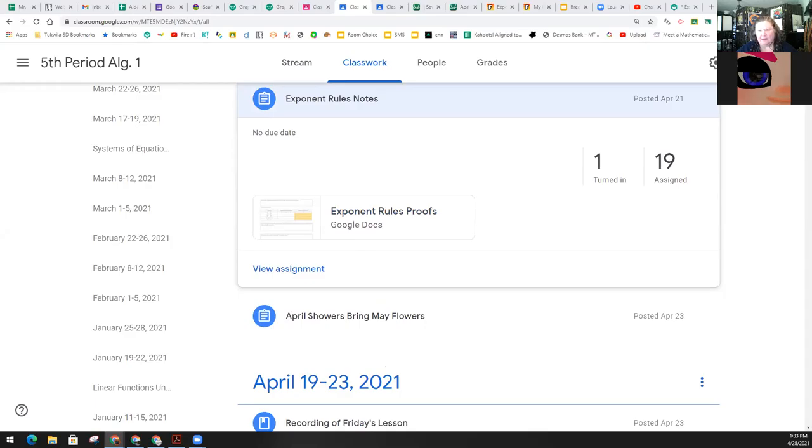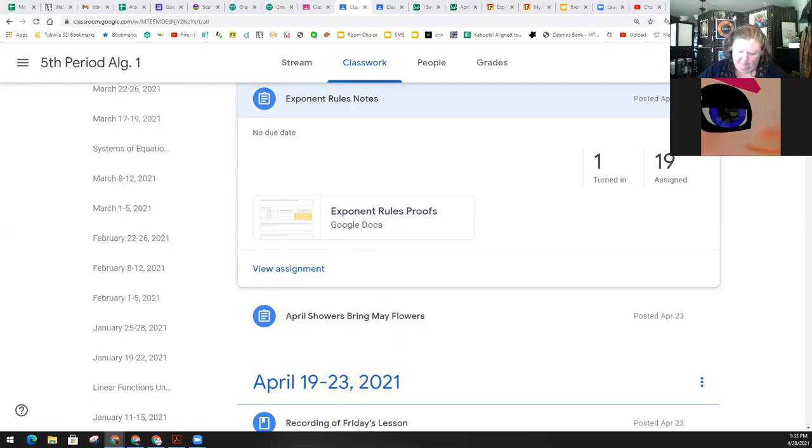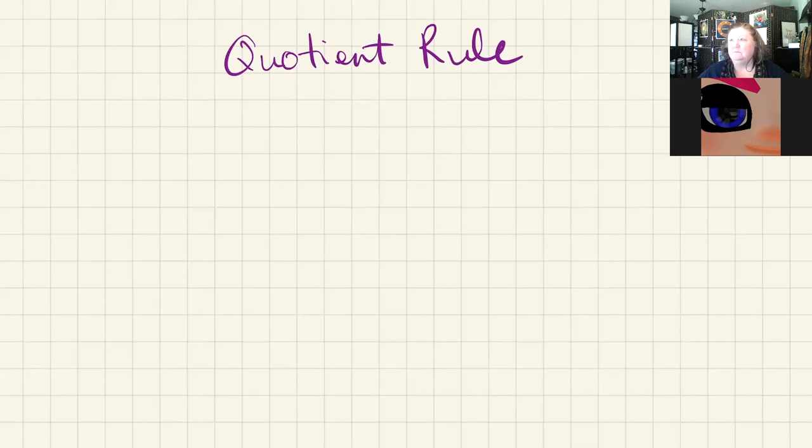Let me get my iPad ready to share. Okay, so the quotient rule. As you'll see on that exponent rules proofs document or the notes that you've been taking with Mr. Craft, who will be here shortly, the quotient rule shows things like two to the third power divided by two to the second power.